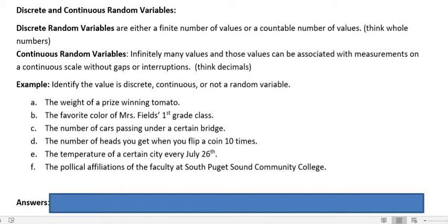The number of heads you get when you flip a coin ten times. Also you could count. You could flip and you could count the heads as you get them. So that's a discrete random variable.